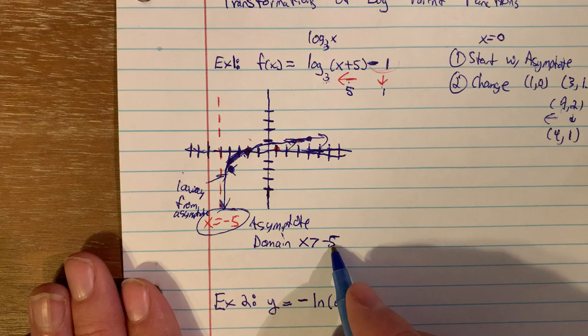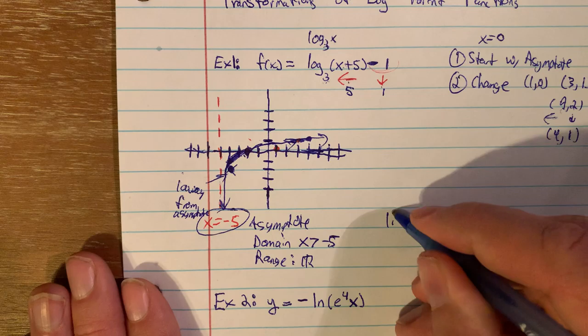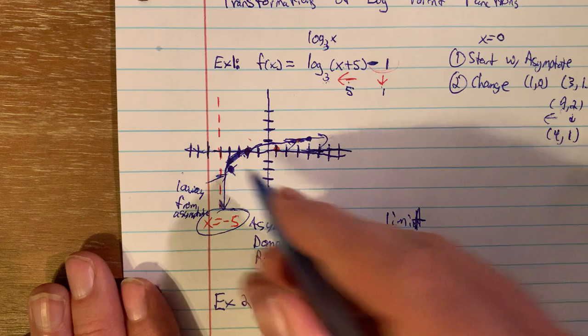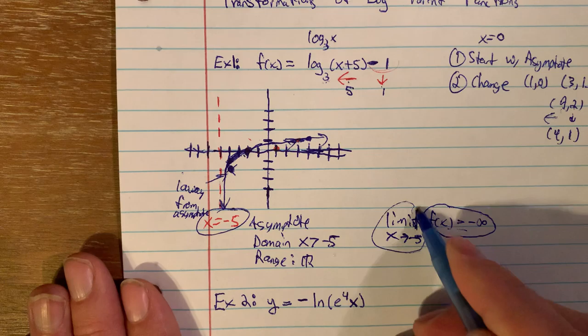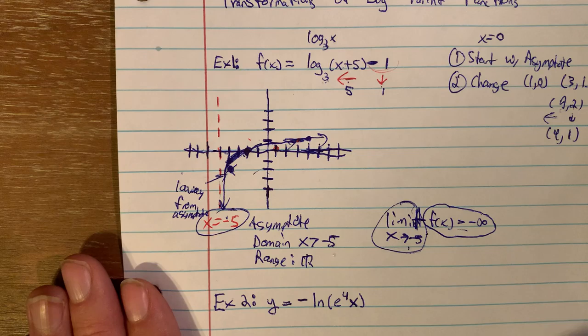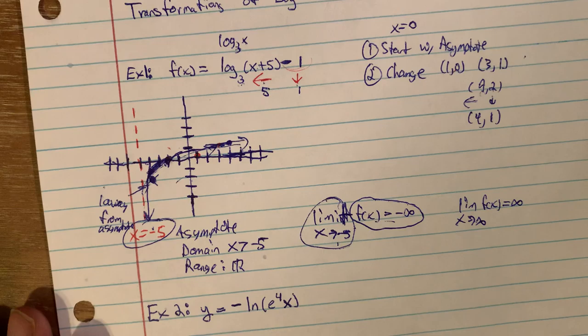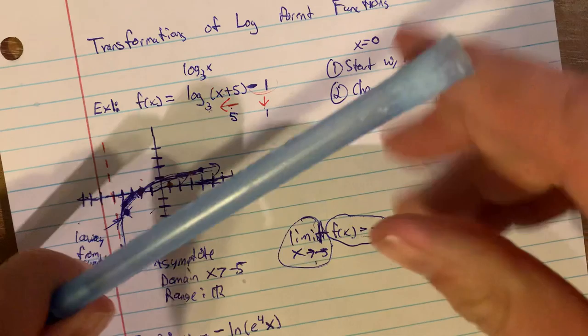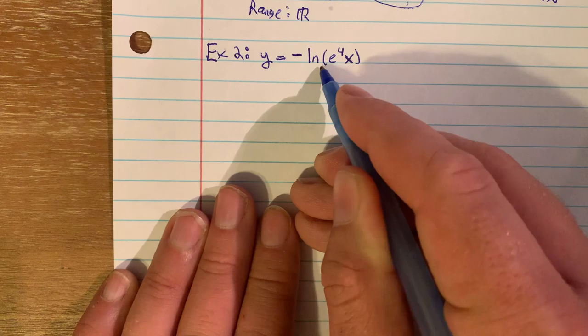Moving the asymptote changes the domain. The new asymptote is x = negative 5, so the domain is now all x greater than negative 5. Values less than negative 5 produce log of a negative number, which is undefined. The range is still all real numbers — that doesn't change. The limit as x goes toward negative 5 gives y → negative infinity, and the limit as x goes toward infinity gives y → infinity. The graph is still concave down and still increasing.